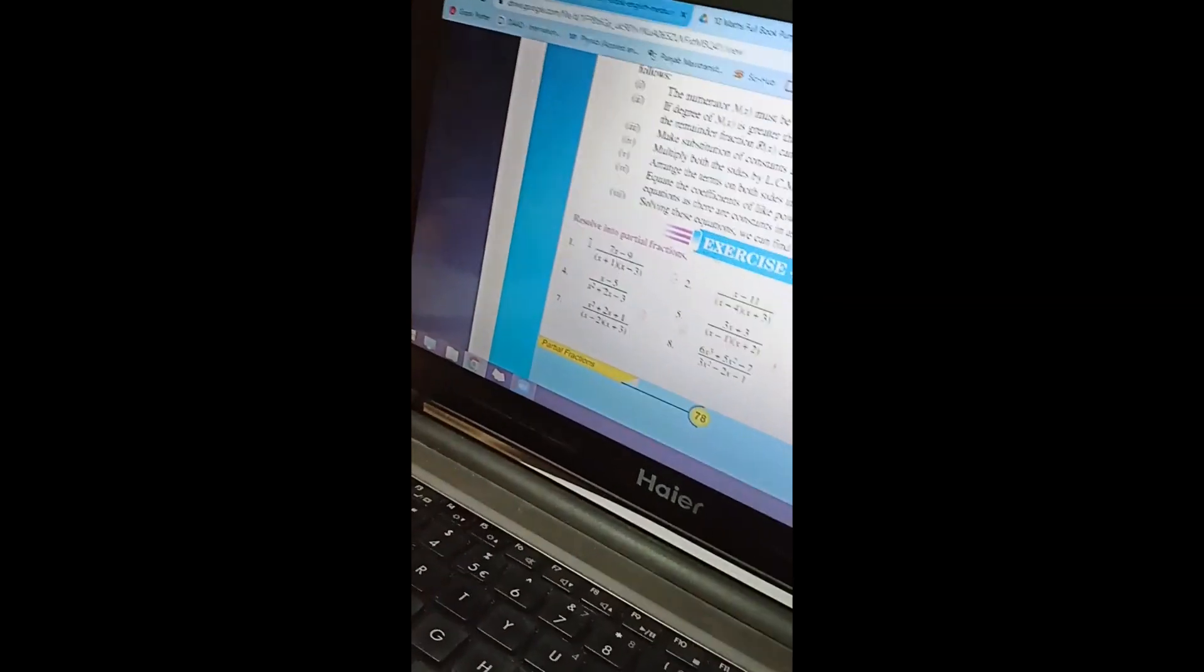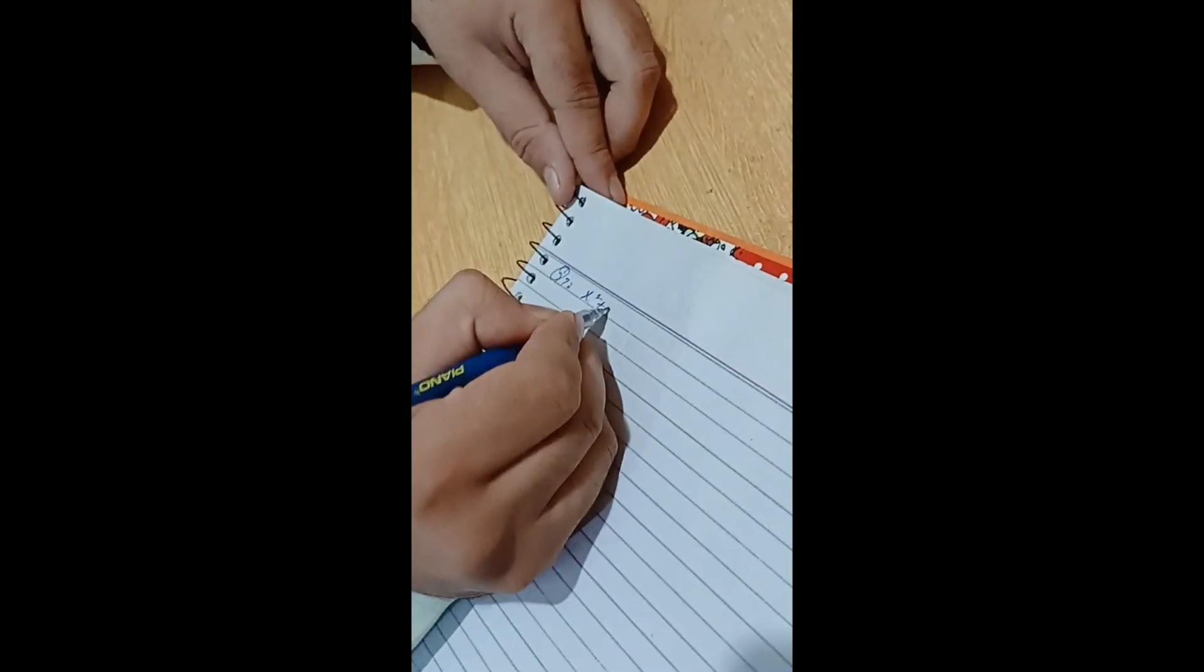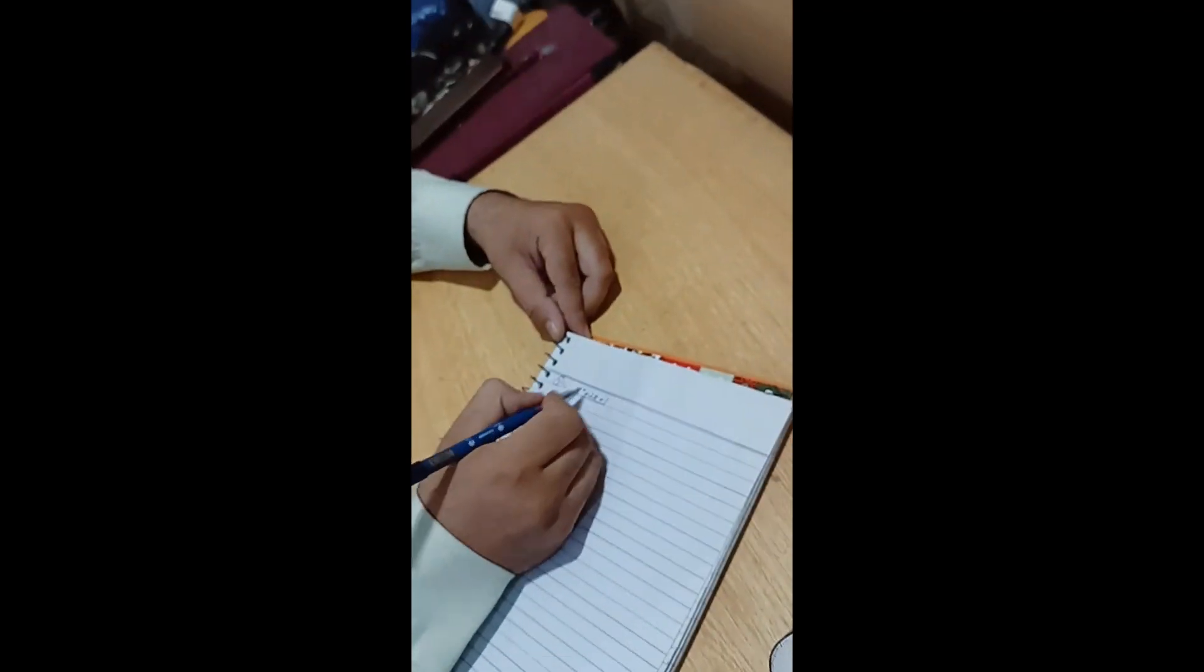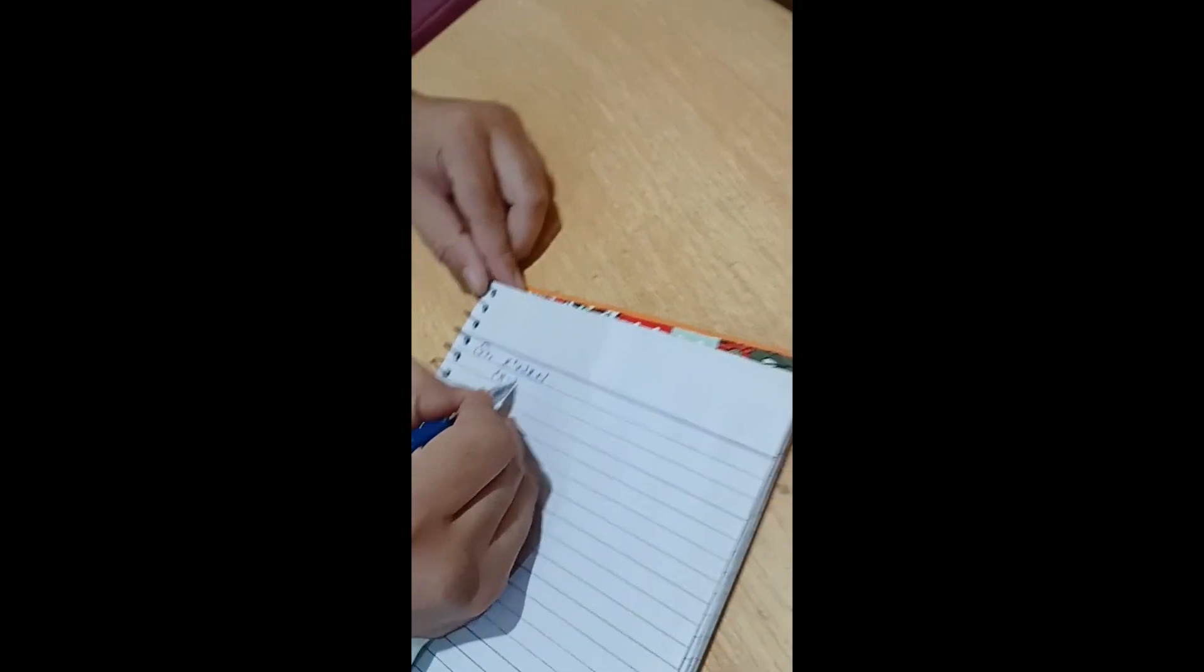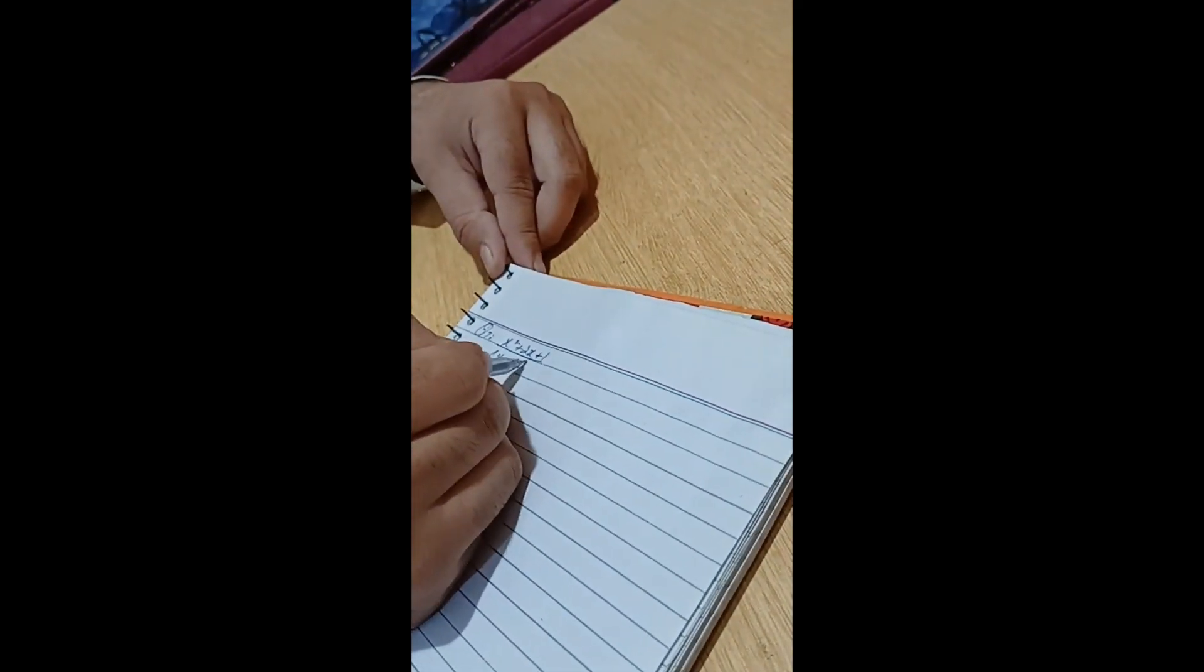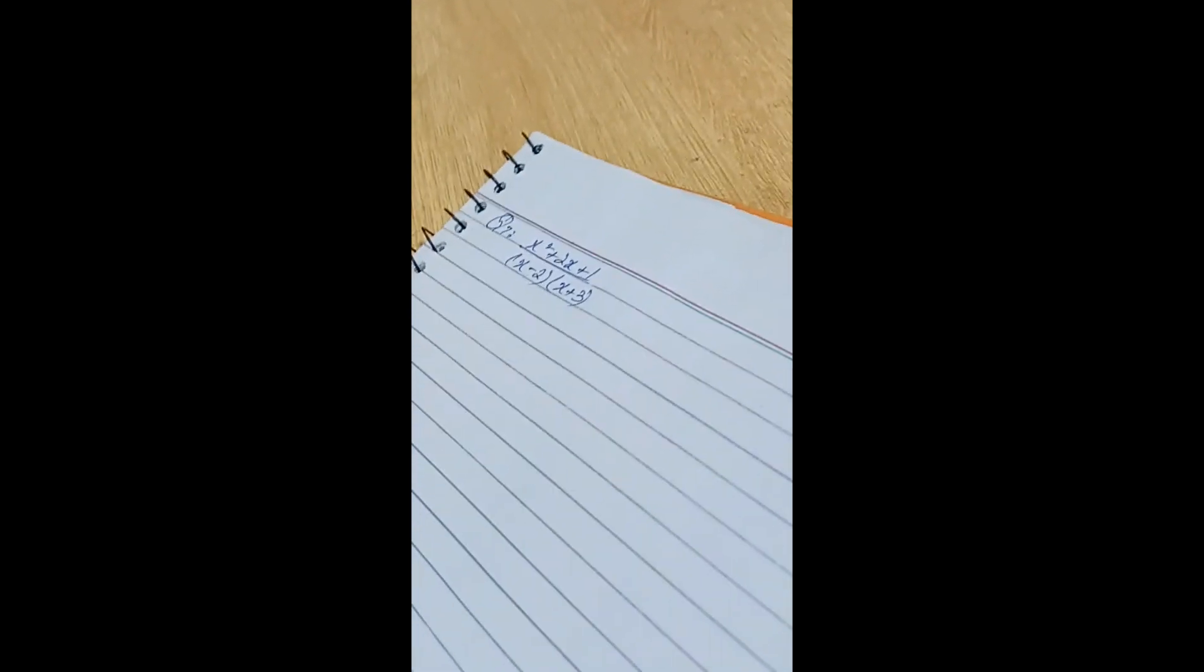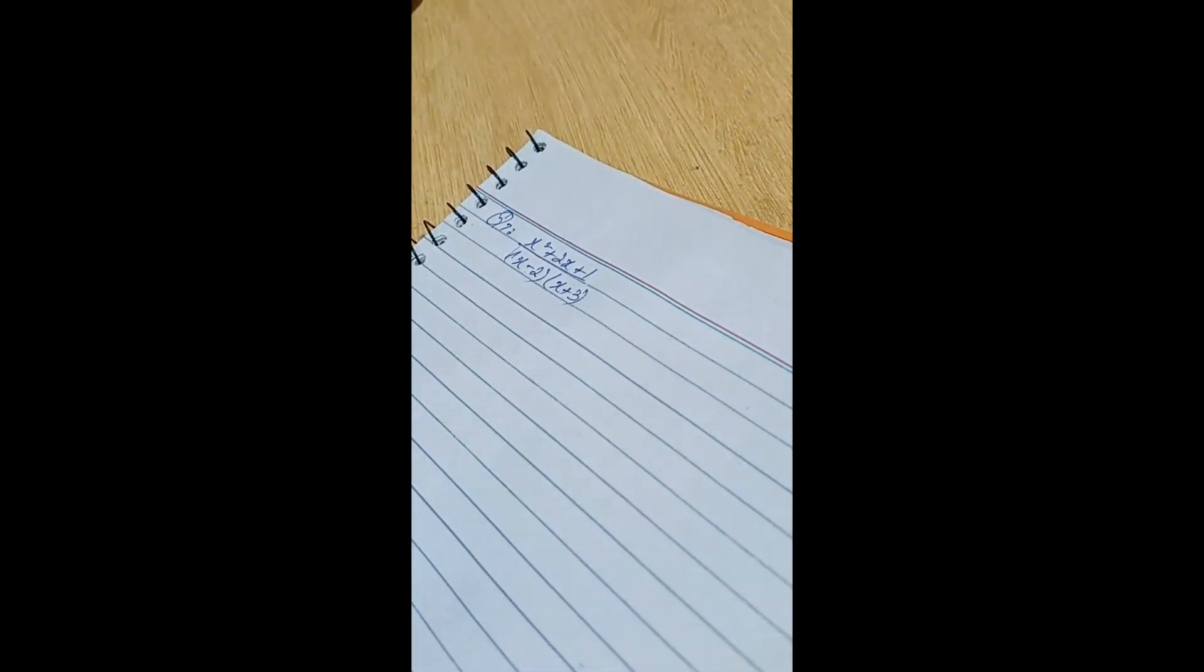Question number seven is (x² + 2x + 1) / [(x - 2)(x + 3)]. Here, when we first multiply both terms in the denominator, it becomes an improper fraction.